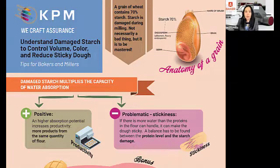So when it goes through the mills, it gets damaged by the rollers. That's how damaged starch happens in the end product and in the flour that you receive from the miller.